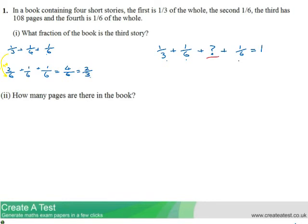So what we've got there is something add 2/3 equals 1. I think people quite quickly can work out that that something must be 1/3. So the final section of the book must take up 1/3 of the book.